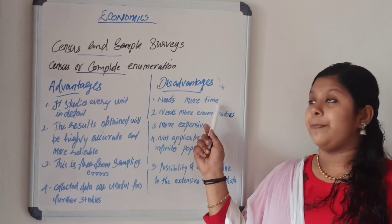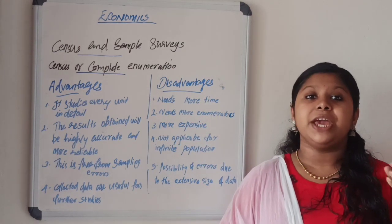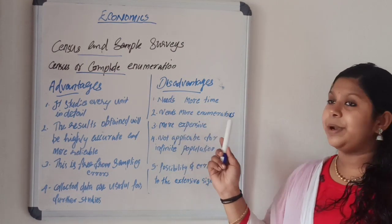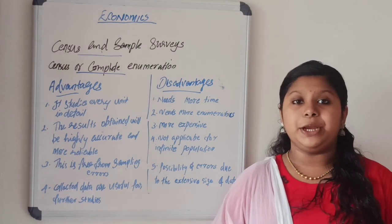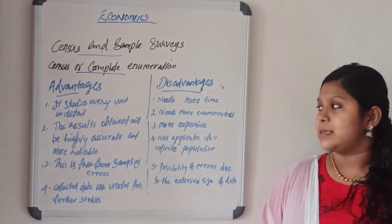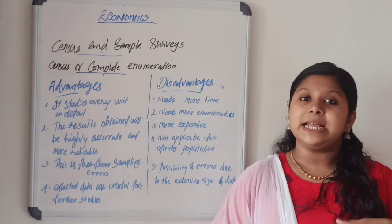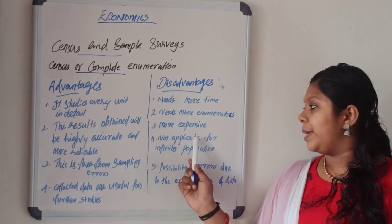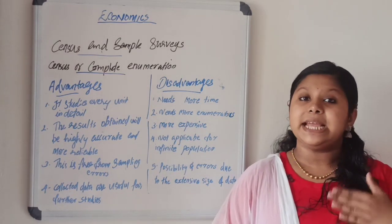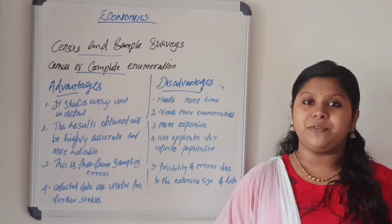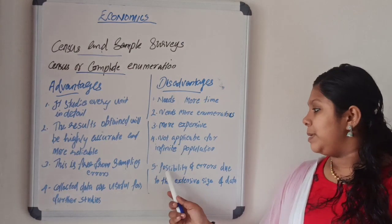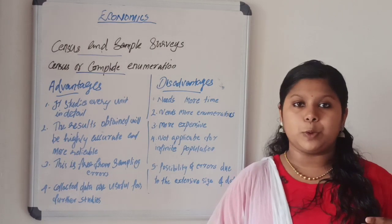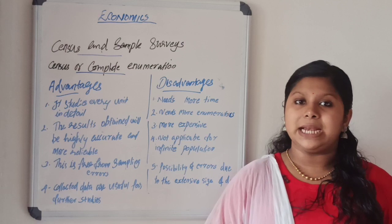To collect census survey data, we need more time and more enumerators. It is highly expensive. It is not applicable for a large area of population. And it is not possible to ask all types of questions to all the people, hence there is a possibility of errors due to the extensive size of data.